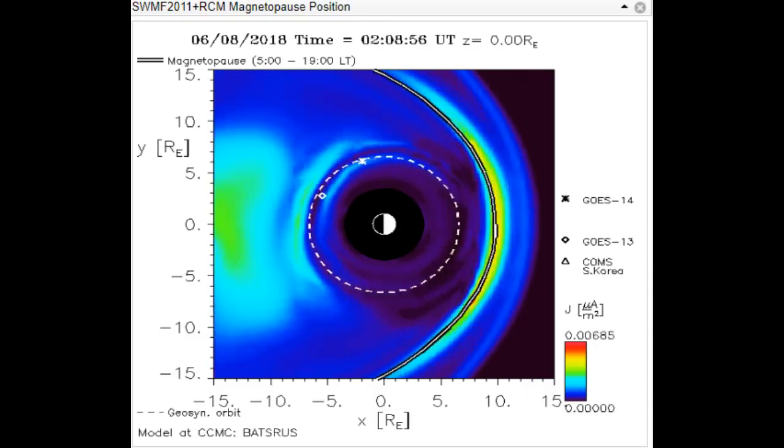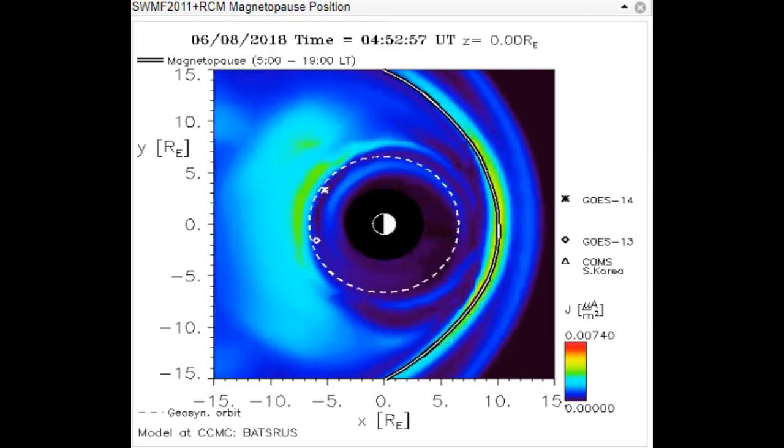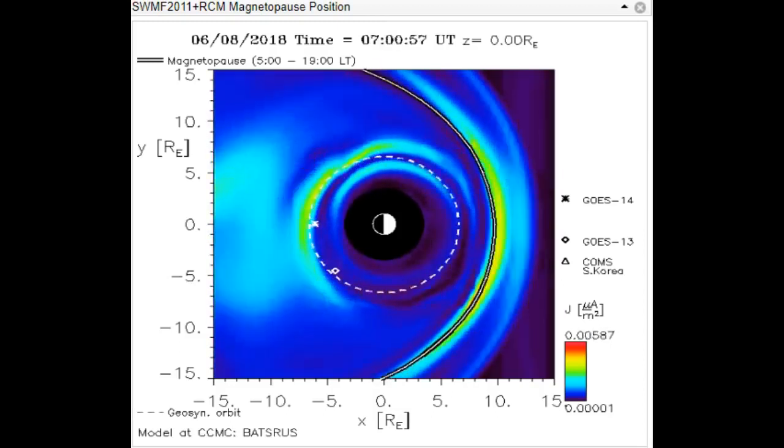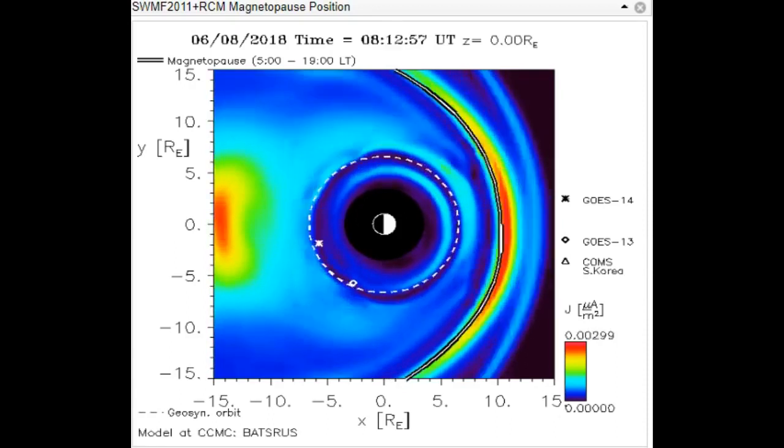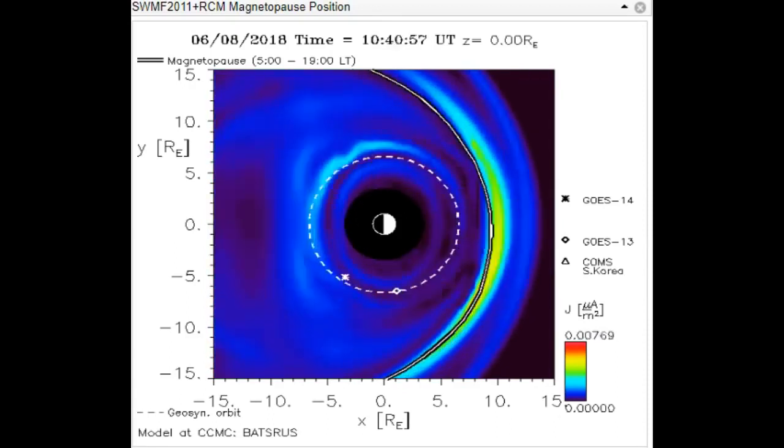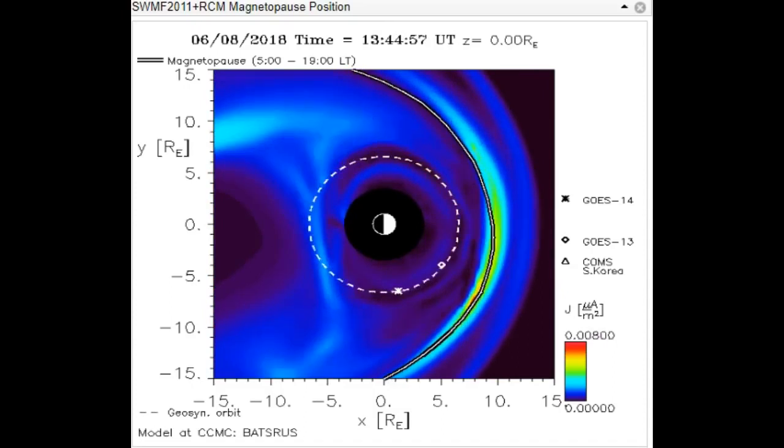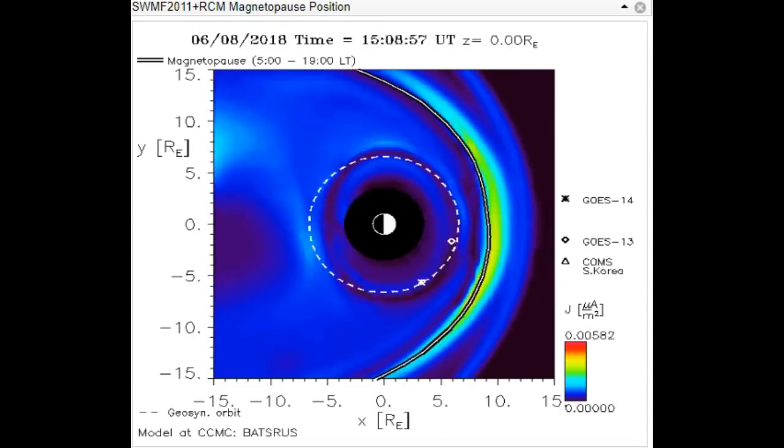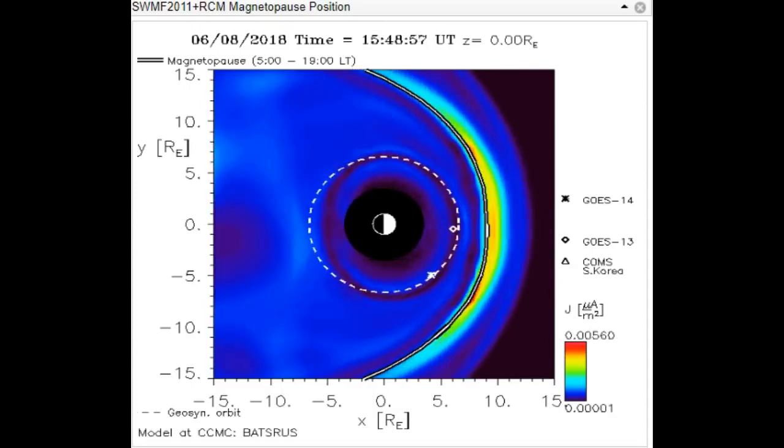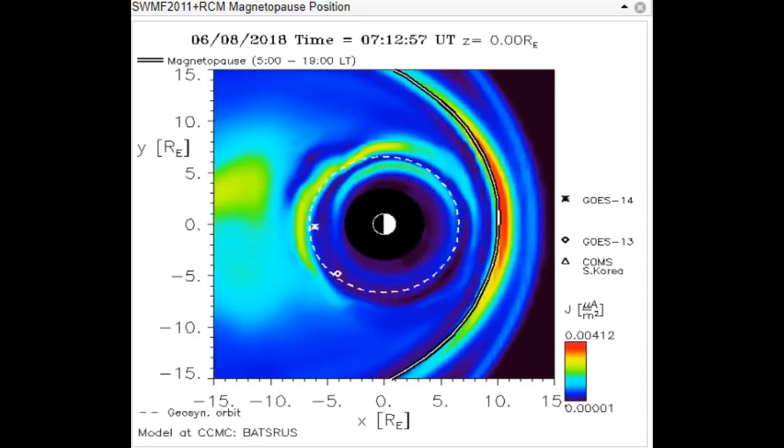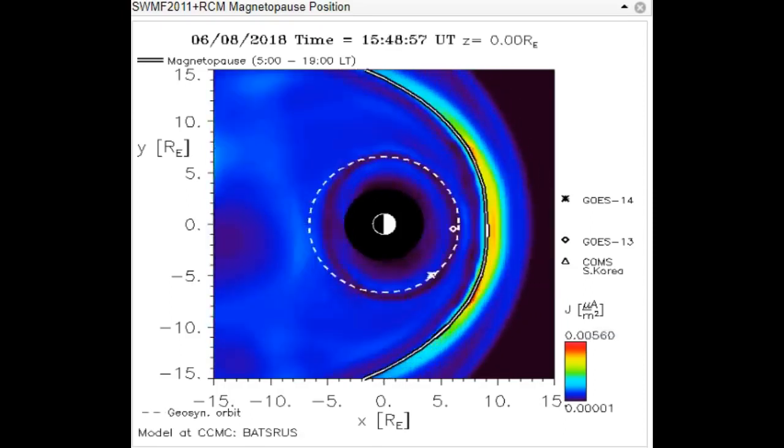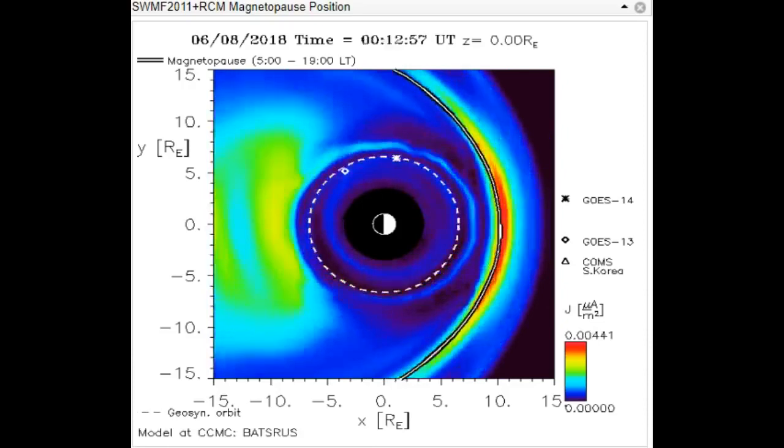That red line is where the white curved line, our magnetopause, is usually at. It's pushed closer to the earth by two points here, but we've seen that before. But what we're seeing now is unprecedented in my seven years of watching this particular model.